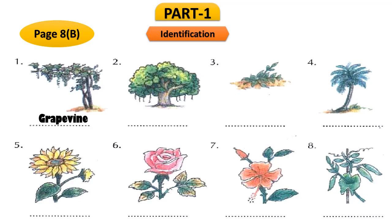In picture number 2 there is a big tree. We know the name of this big tree is banyan tree. So we will write banyan here. In question number 3 there is a small plant. It looks like a plant and it is known as mint. Normally we use mint in our curry.